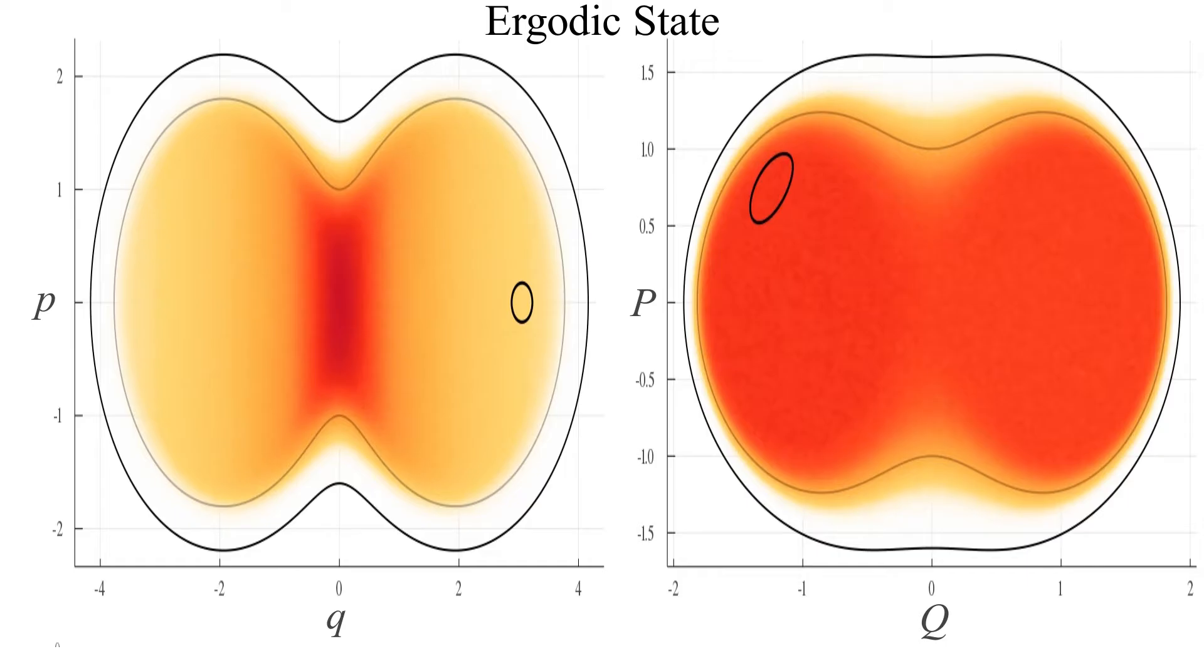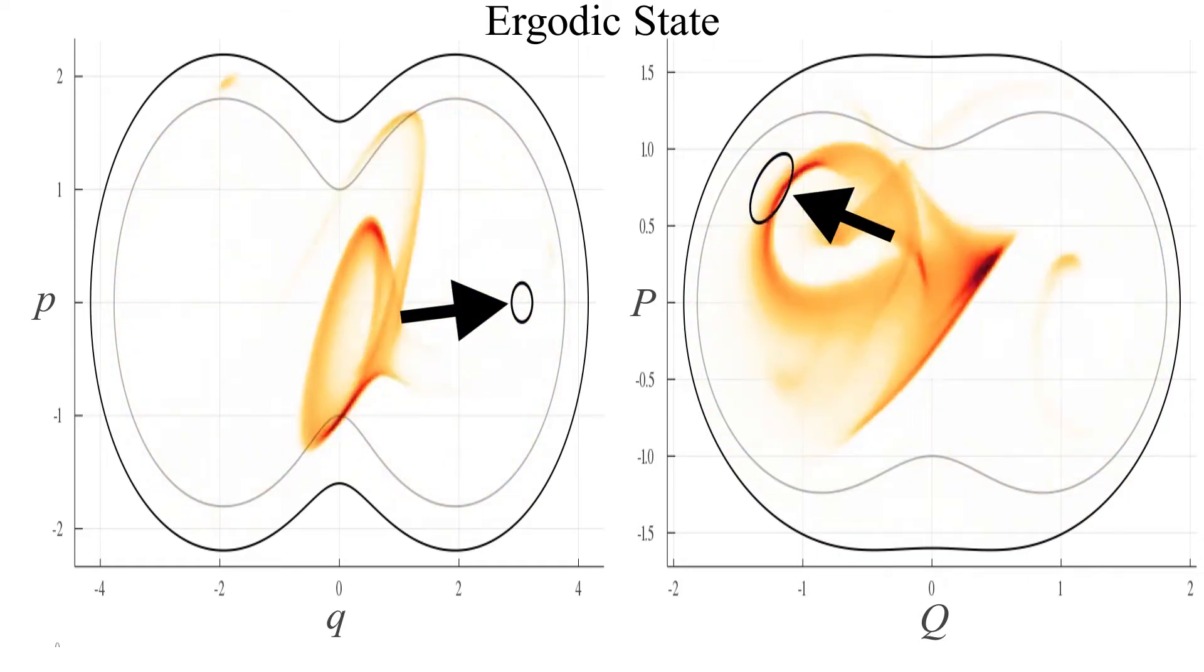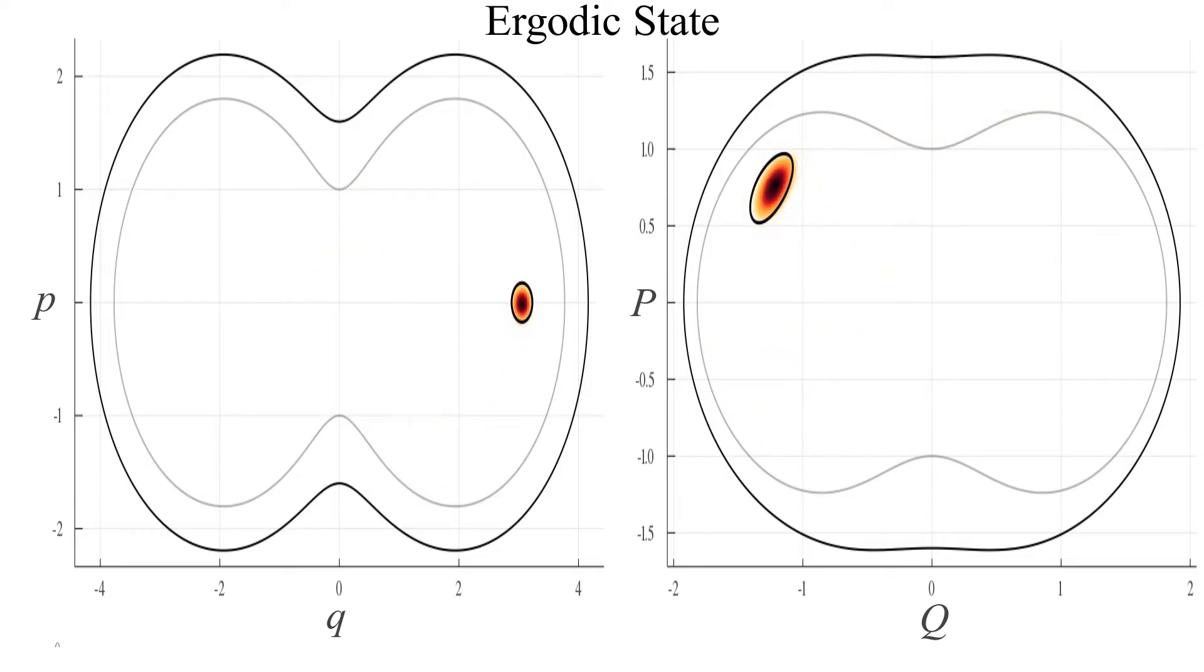To quantify how much an ensemble is spread in the phase space, we measure the amount of color that is inside of the initial region at any given time. We call this quantity the classical survival probability.